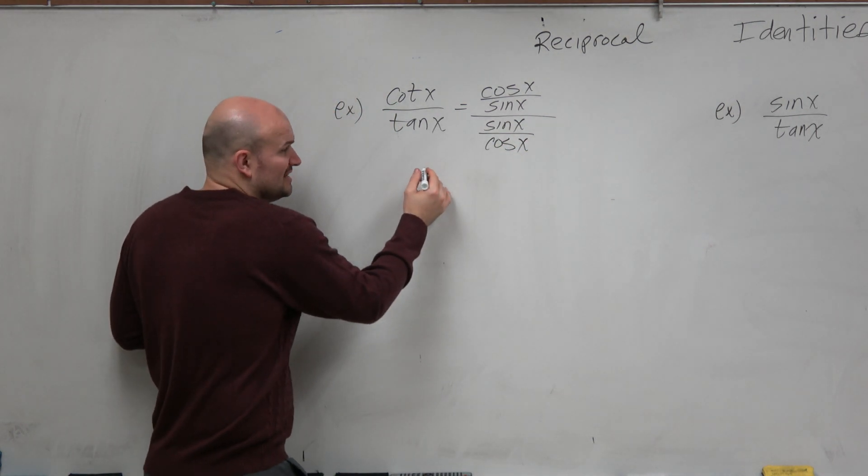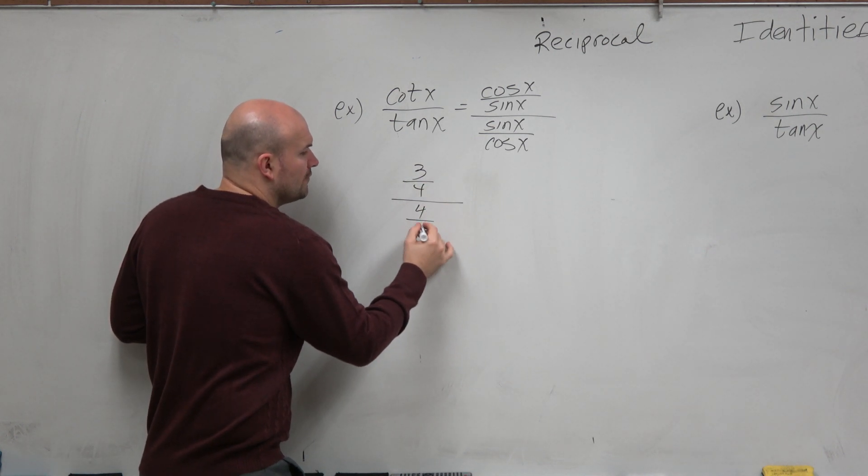So it's almost something like this. It's like 3 over 4 divided by 4 over 3.